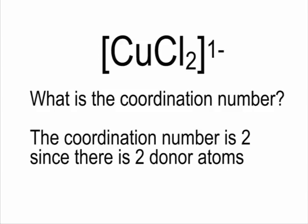So it's quite easy to determine the coordination number. You simply have to look how many donor atoms are there. How many atoms are linked to your central metal, which is, in this case, copper. So we have two chloral ligands. Both are monodentate, and both are bonded to our copper. So our coordination number is 2.